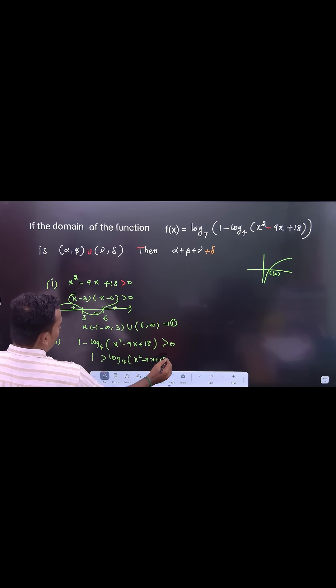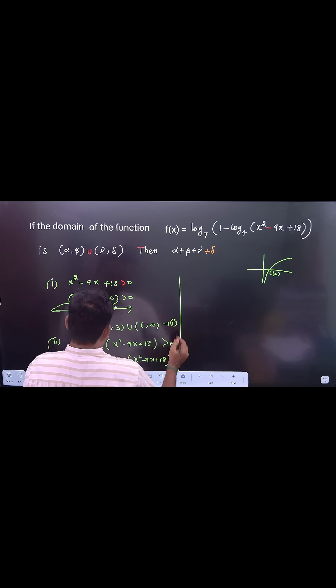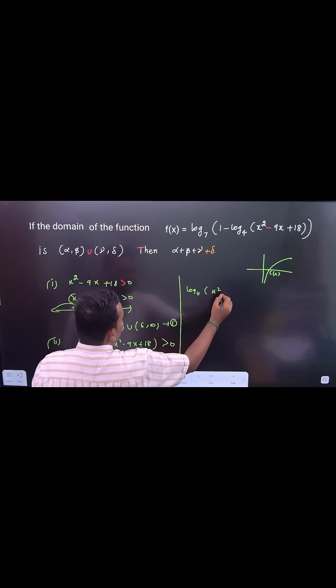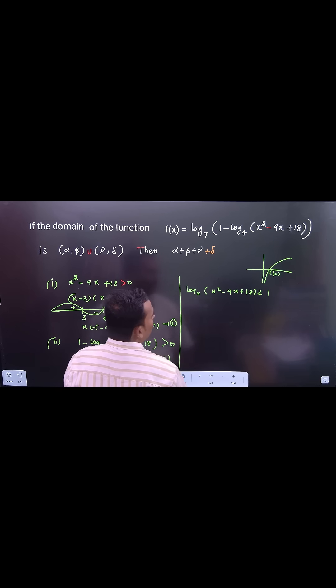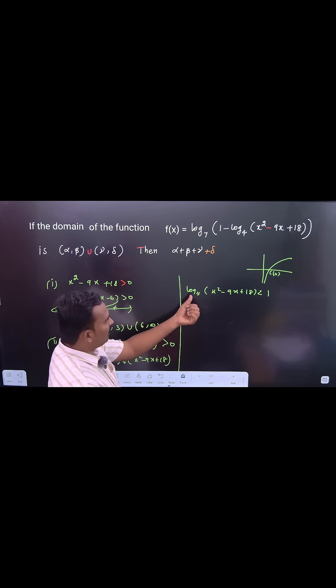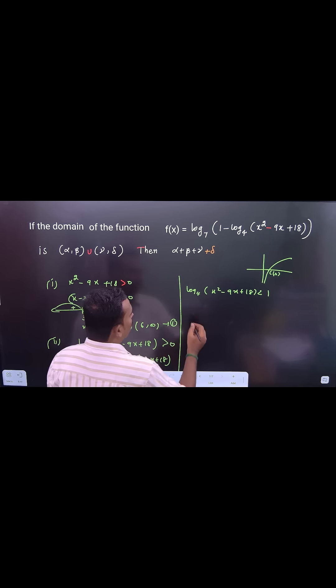So you rewrite this equation: log base 4 (x² - 9x + 18) is less than 1. So we need x value. Log base 4 is disturbing. You have to raise the base 4 on both sides.